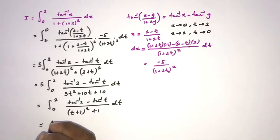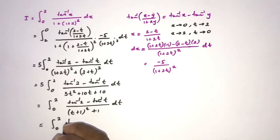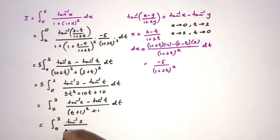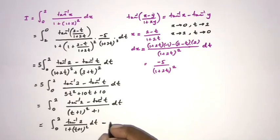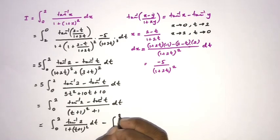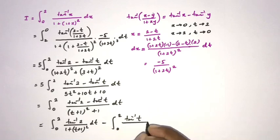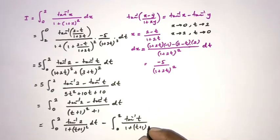We split this into two integrals: the integral from 0 to 2 of inverse tan 2 over (1 plus (t plus 1) squared) dt, minus the integral from 0 to 2 of inverse tan t over (1 plus (t plus 1) squared) dt.